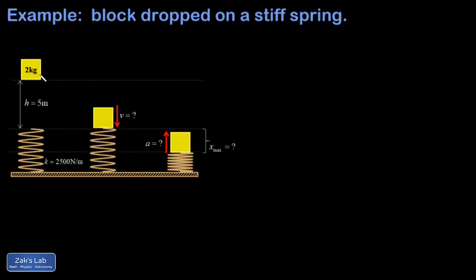In this example, we're dropping a block of mass two kilograms through a height of five meters onto the tip of a spring with a constant of 2,500 newtons per meter.